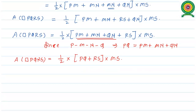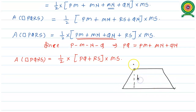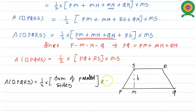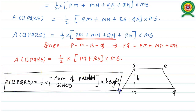That means, once we consider the trapezium having height H, where MS is the height, we can write the general formula for evaluating the area of any trapezium PQRS equals half times the sum of parallel sides PQ and RS, whole into height. This is the general formula for evaluating the area of a trapezium. The unit for area is square units or sq. cm.